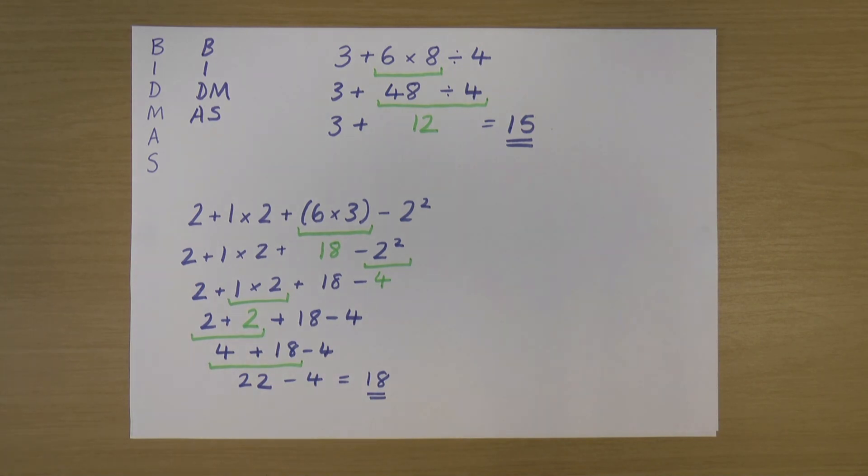So hopefully you can see how I've used BIDMAS there and how those equal priority rules actually work when we're doing a sum.